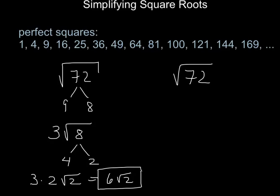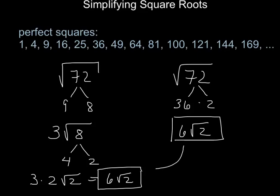Now others might look at 72 and say wow 36 goes into 72 evenly. It's 36 times 2. And the 36 can come out of the square root symbol as a 6 and the 2 will stay inside the square root symbol. So the answer is 6 the square root of 2. And what's terrific is that those two answers match. So if you find a short path great but if you don't find the shortest path you can still get to the right answer.